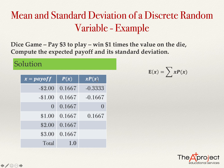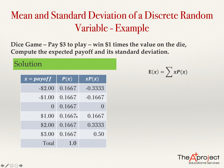Continuing: two times 0.1667 gives 0.3333, and three times 0.1667 gives 0.5. Adding together all these x·P(x) products gives the mean. You can use a calculator — notice the negative values cancel with positive ones. The answer is 0.50, which is the mean.